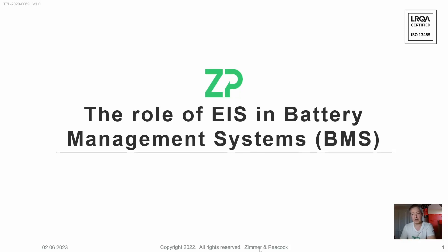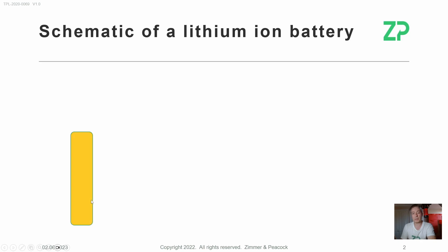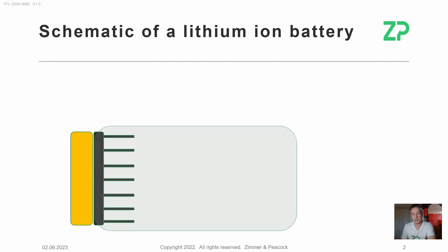Welcome to this video on the role of electrochemical impedance spectroscopy in battery management systems. When we talk about electrochemical impedance spectroscopy, we are talking about very small instruments, the sort of size of a mini PCB with the appropriate chips on board. When we talk about battery management systems, we're primarily thinking about lithium-ion batteries.